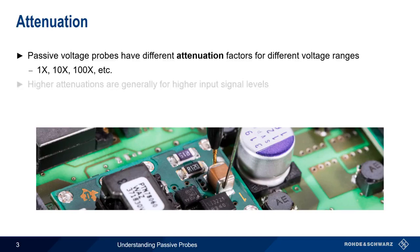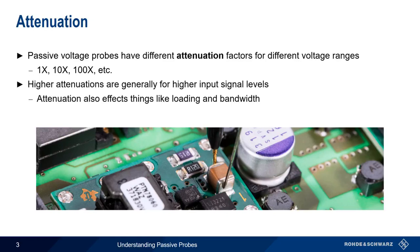It should be clear that higher input levels require probes with higher attenuations. But as we'll see, the probe's attenuation factor also affects things like loading and bandwidth. The two most common attenuation factors are 1x and 10x, so let's take a closer look at each of these.